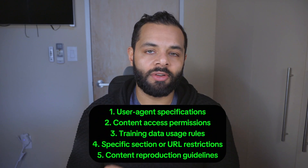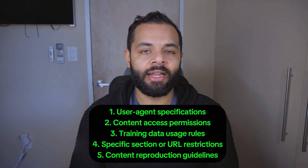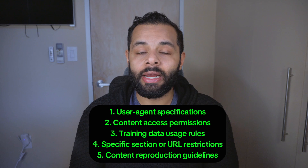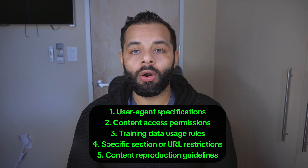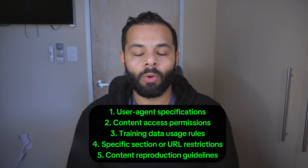Key components of LLMs.txt include user agent specifications for different AI systems, content access permissions, training data usage rules, specific section or URL restrictions, and content reproduction guidelines. Organizations that proactively implement LLMs.txt protocols are better positioned to maintain control over their content as AI search capabilities continue to expand and take over SEO.